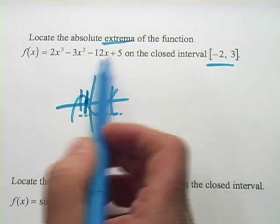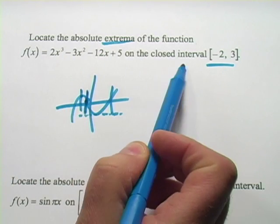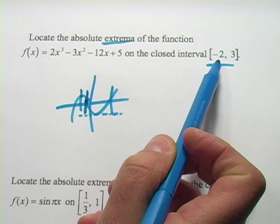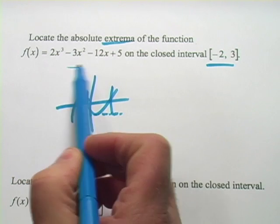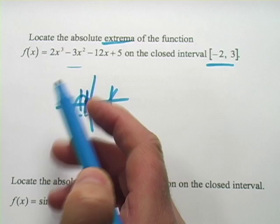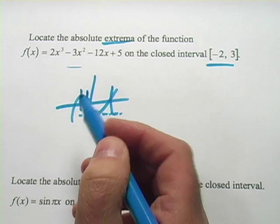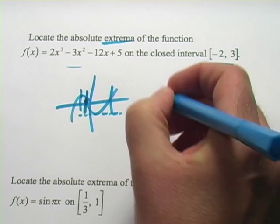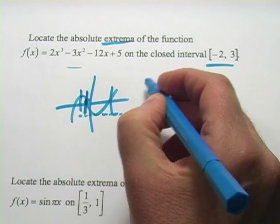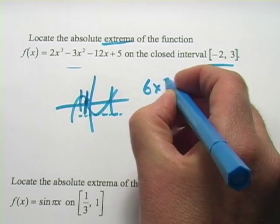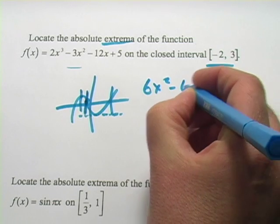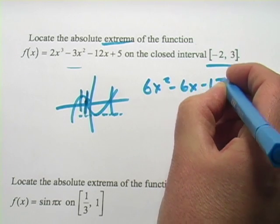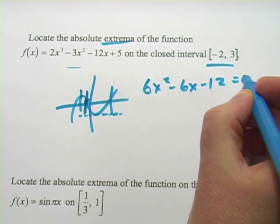Here we're locating the absolute extrema of this function on the closed interval from negative two to three. So the first thing we're going to do is take the derivative of this thing and find the zeros to see if we have some points in this interval to test. So let's take the derivative. That would be 6x² - 6x - 12, and then we'll set that equal to zero.